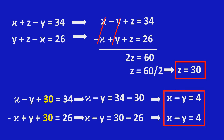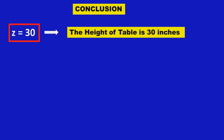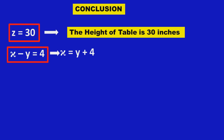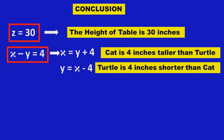We are left with a single equation, but we have to find two unknown values — the heights of the cat and the turtle. Since we only have one equation, we can't find both unknowns individually. The conclusion is: Z equals 30, so the height of the table is 30 inches. X minus Y equals 4, meaning the cat is 4 inches taller than the turtle, and the turtle is 4 inches shorter than the cat.